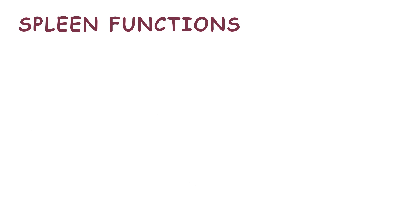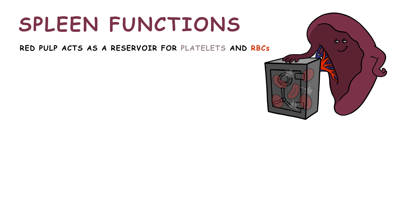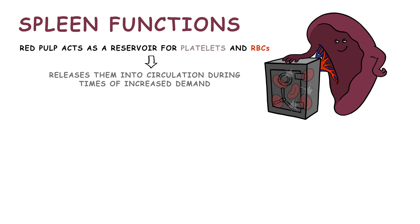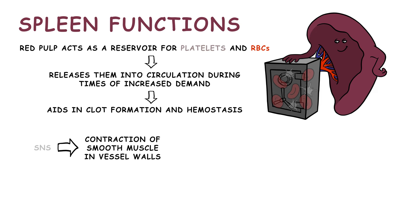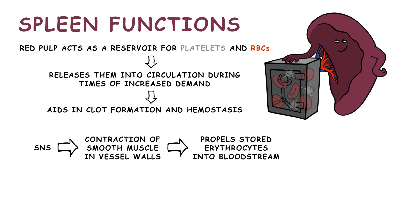Additionally, the spleen's red pulp acts as a reservoir for platelets and red blood cells, releasing them into circulation during times of increased demand, such as in cases of bleeding or injury, to aid in clot formation and hemostasis. Contraction of smooth muscle in the spleen's vessel walls, facilitated by sympathetic nervous system signals, propels stored erythrocytes back into the bloodstream, aiding in the maintenance of erythrocyte homeostasis and ensuring adequate oxygen delivery.